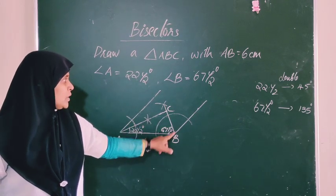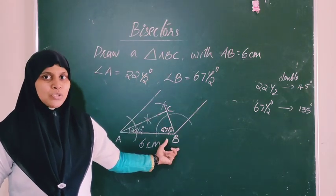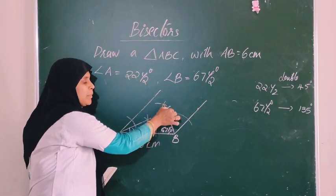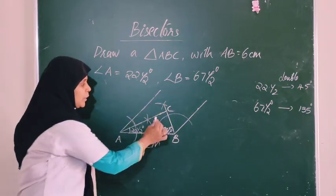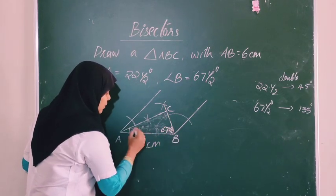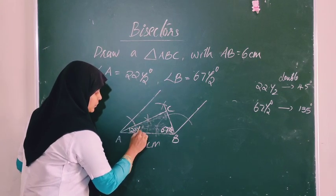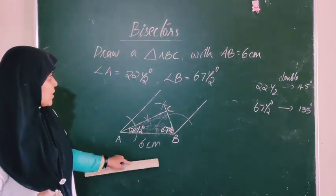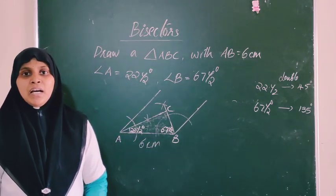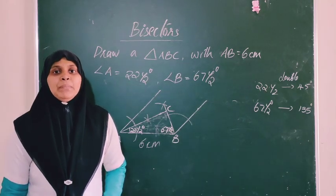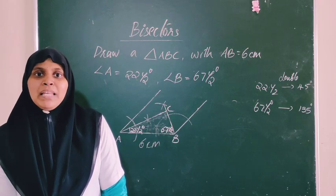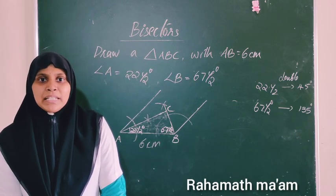This is the angle bisector method. We add the angle bisector at B to get 67 and a half degrees. Then we join the two rays from A and B to meet at point C. This gives us triangle ABC with side 6 centimeters and angles 22 and a half degrees and 67 and a half degrees.